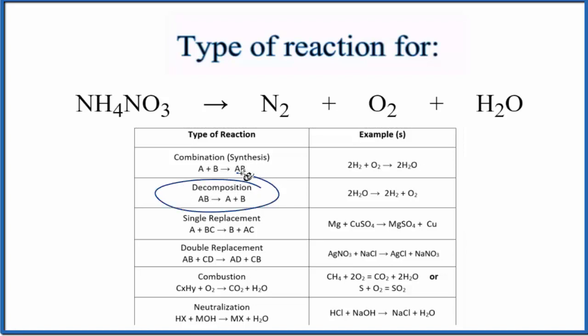And usually when they talk about decomposition, they say AB yields A plus B, only two things. But it's okay to have more than two things. Here we have three things. This is still a decomposition reaction. This is Dr. B with the type of reaction for NH4NO3 decomposing into N2 plus O2 plus H2O.